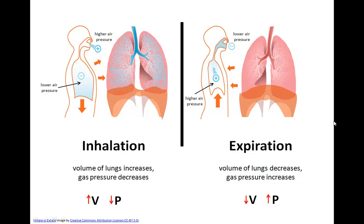When you exhale, the external intercostal muscles relax and the ribs fall back down and inward. The diaphragm relaxes and pushes upward. This decreases the volume of the lungs, which increases the gas pressure inside. The air pressure inside the lungs is now higher than atmospheric pressure outside your body — like squeezing on a balloon, forcing air out. You exhale, or expiration.